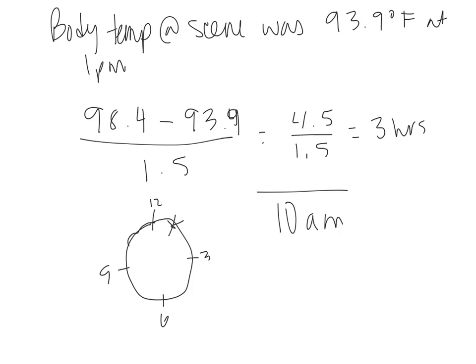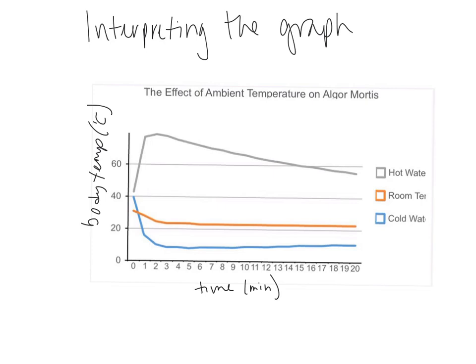One important note before we move on to interpreting the graphs: you can only use the Glaser equation in an indoor environment. Also, all you need for the equation is the temperature measured at the crime scene — no other information is required.